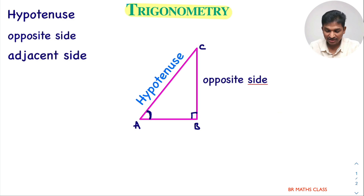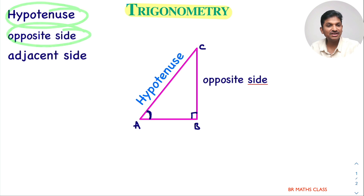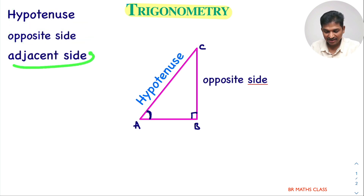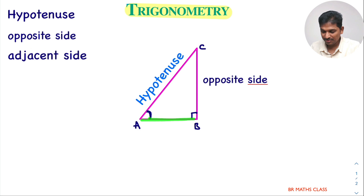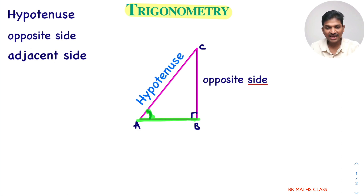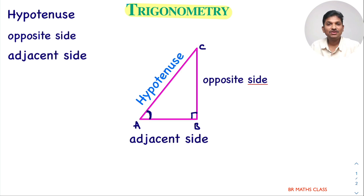Now two things are over — you know what hypotenuse is and what opposite side is. Obviously, the remaining one is the adjacent side. This AB is the adjacent side to angle A. So finally you know what is hypotenuse, what is opposite side, and what is adjacent side.